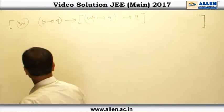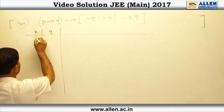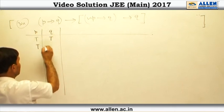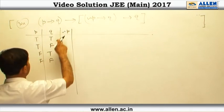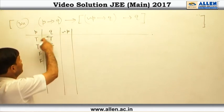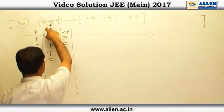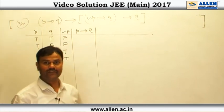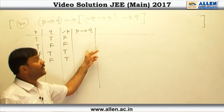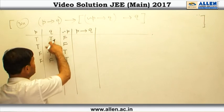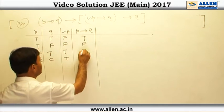We draw a truth table. Writing all combinations of p and q: true-true, true-false, false-true, false-false. For denial of p: when p is true, ¬p is false; when p is false, ¬p is true. For p → q: it is false only when p is true and q is false; otherwise it is true. So the column reads: true, false, true, true.